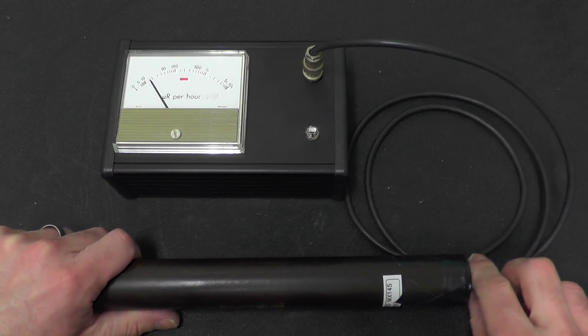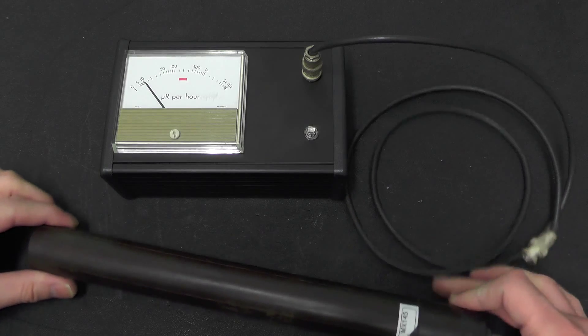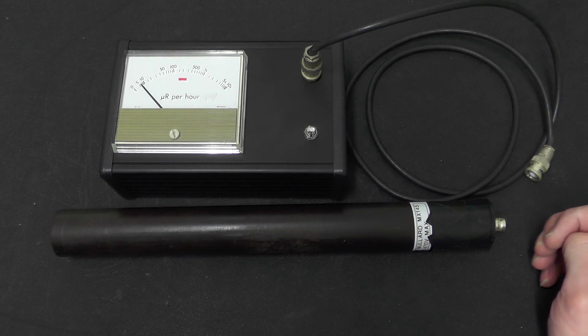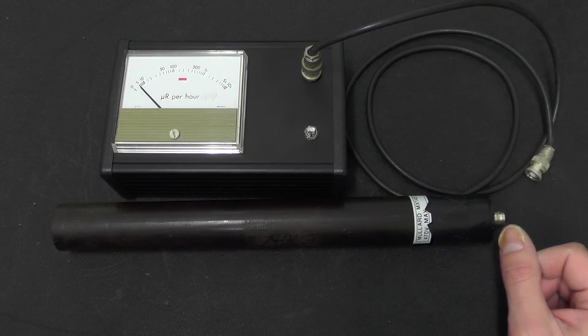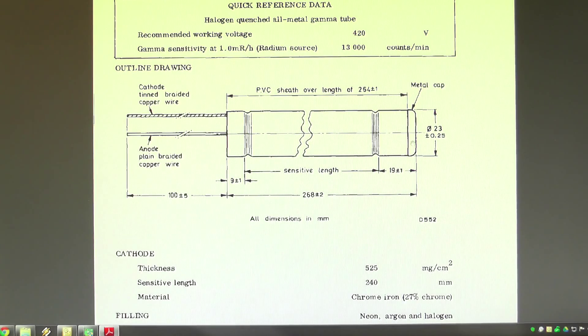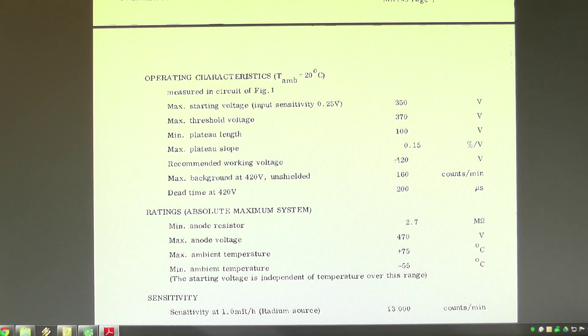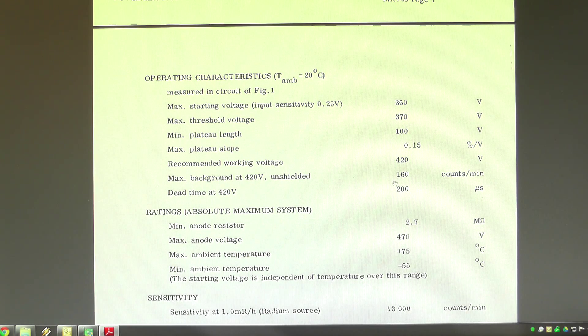which also included the shielding that was around the tube as well. Now what I managed to do is actually find a Mullard technical document which details all the specification about this tube and all of the other Geiger tubes that Mullard did. So this is the document that I managed to find. It gives you all technical details about this tube including the recommended working voltage, starting voltage and some details about how sensitive it is as well.